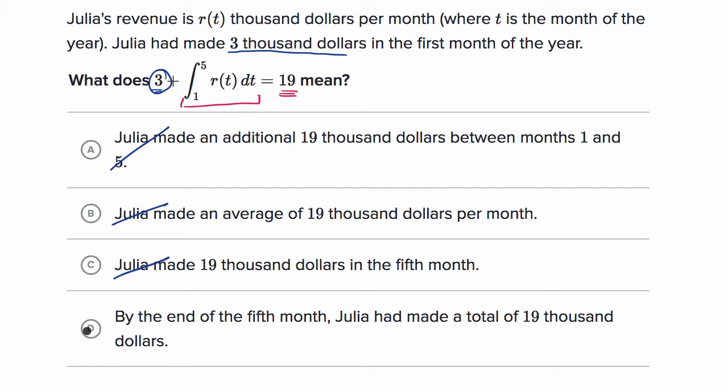Yes, that is correct. She made $3,000 in month one and then as we go between month one to the end of month five, to the end of the fifth month, she has made a total of $19,000. Let's do another one of these.